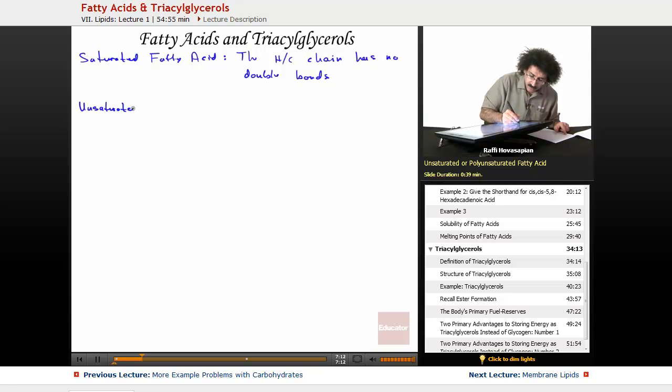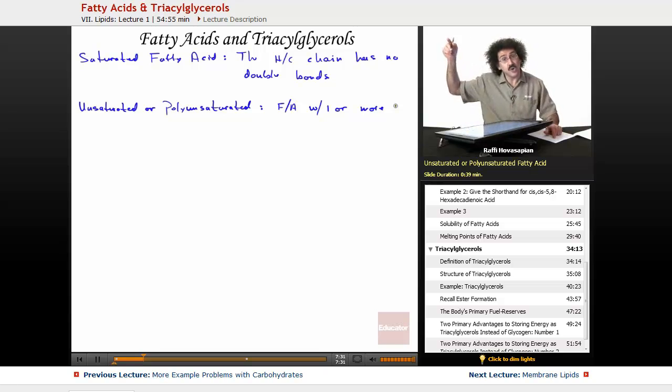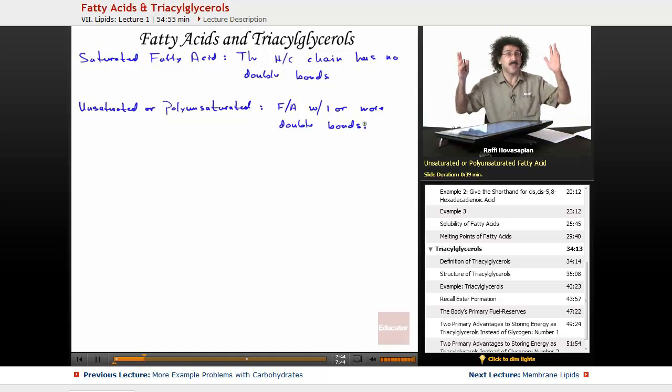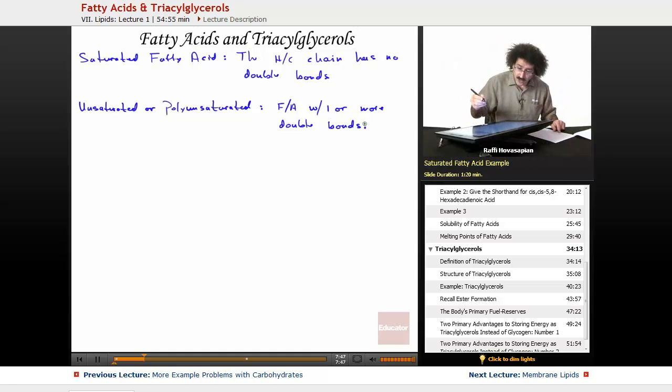So unsaturated is exactly what you think. Unsaturated or polyunsaturated - it is a fatty acid with one or more double bonds along the chain. You'll often hear of a monounsaturated fatty acid - it has one double bond. A polyunsaturated fatty acid has two, three, four, six, nine double bonds, however many.